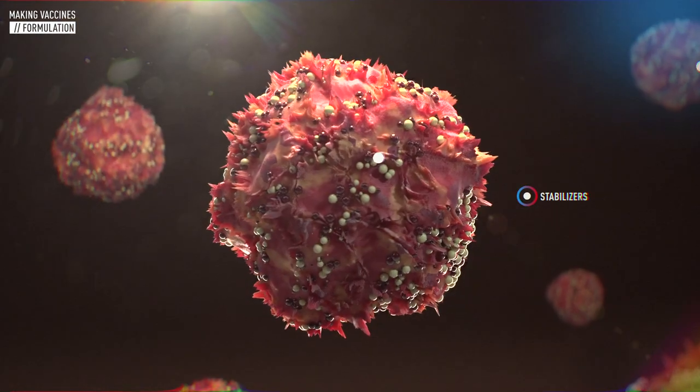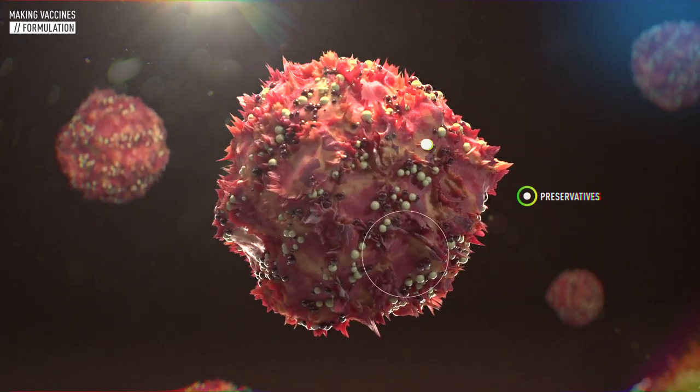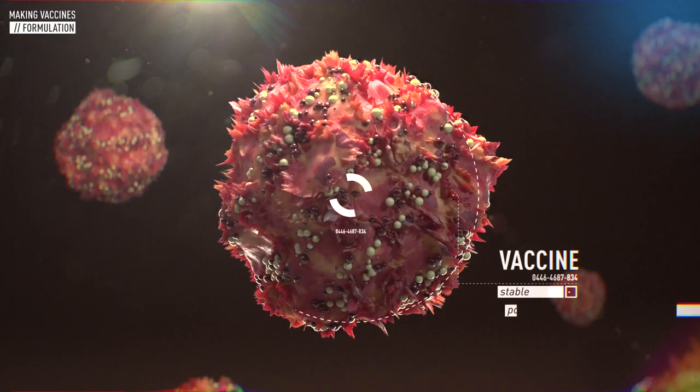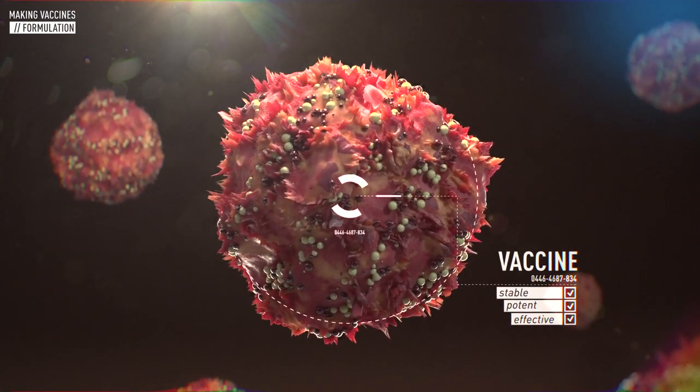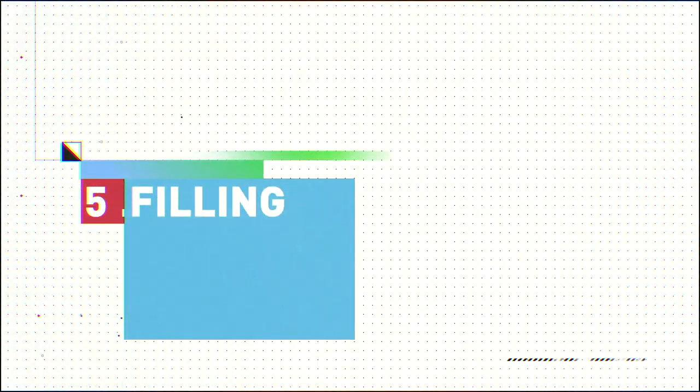Then, stabilizers or a preservative are added in extremely small quantities to help guarantee that the vaccine will remain stable, potent, and effective. Sometimes an adjuvant is also added to enhance the body's immune response to the vaccine.